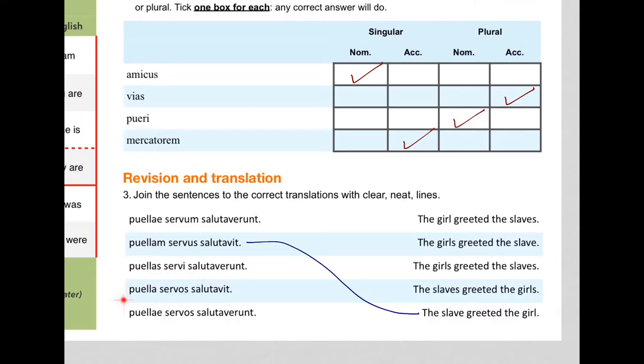The second one of those. This one here. This time the nominative is the girl. The girl greeted. And that's the accusative plural. So that's the girl greeted the slaves. Which we can see is up there. OK.